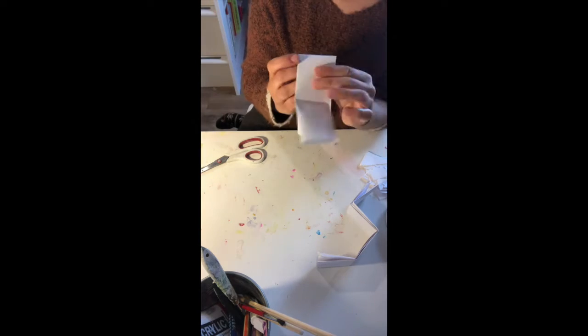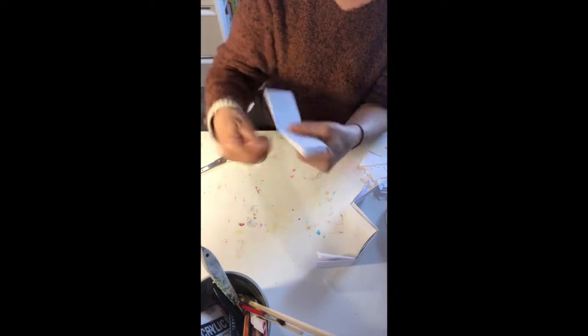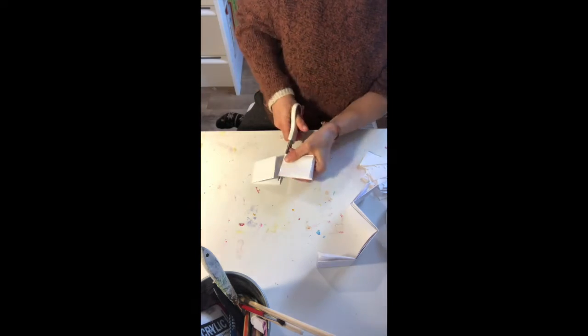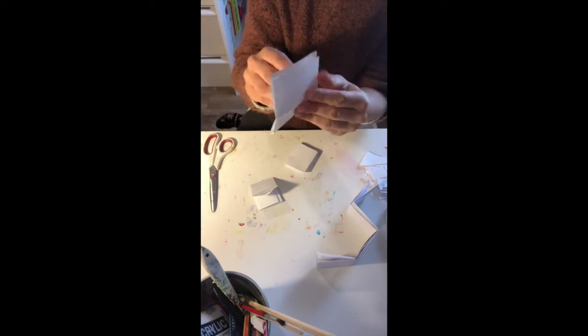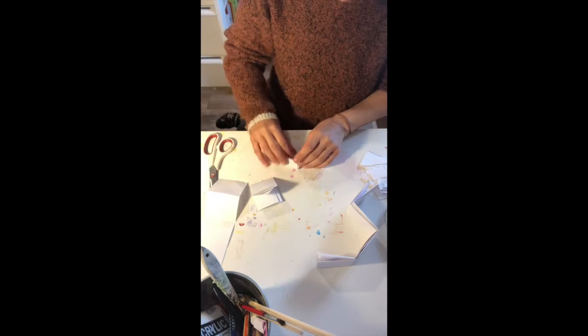Unfold your last fold so that you have two rectangles and cut in half. You want to end up with four strips of four small rectangles.